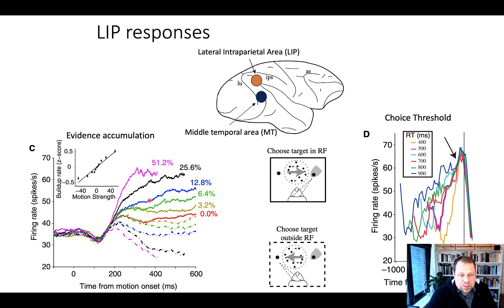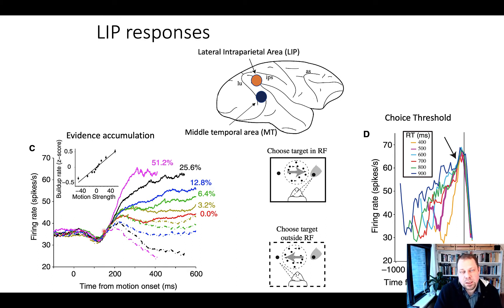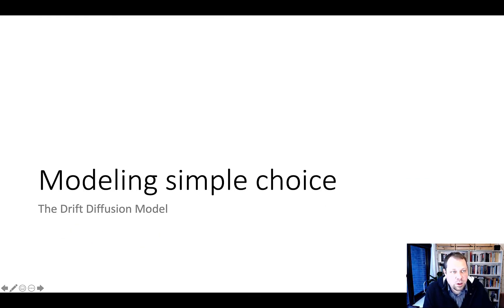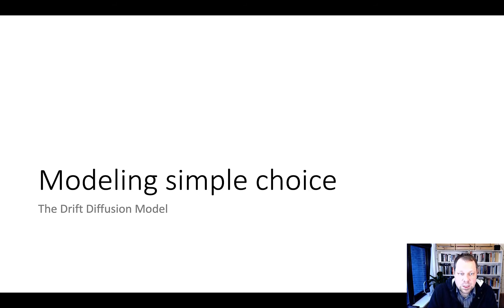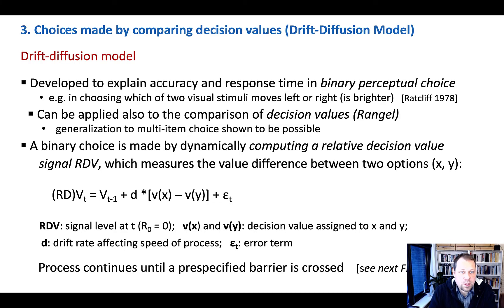This is similar to what we'll see when we discuss evidence accumulation for or against one option versus the other in the context of the drift-diffusion model. This knowledge brings us to modeling simple choice. The drift-diffusion model was developed to explain accuracy and response times in binary perceptual choice.